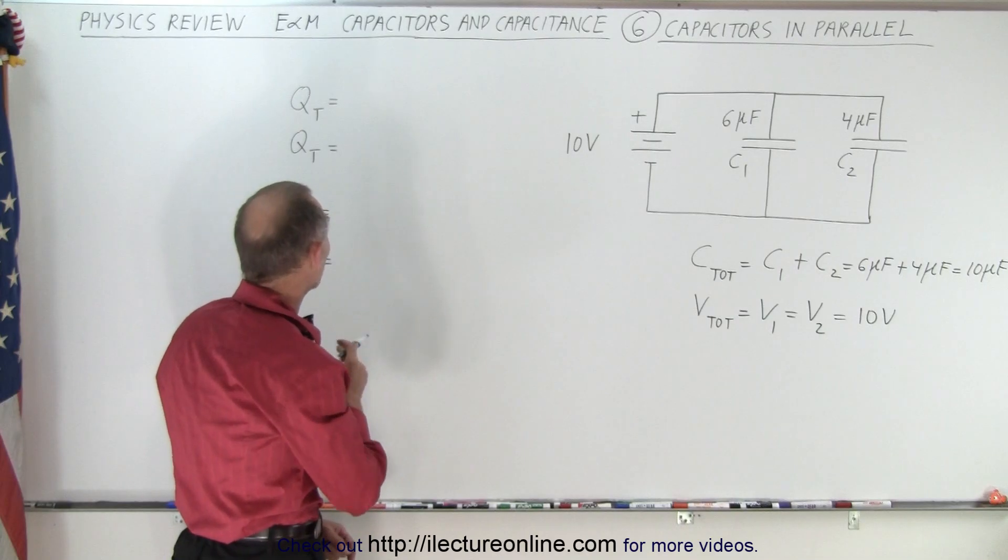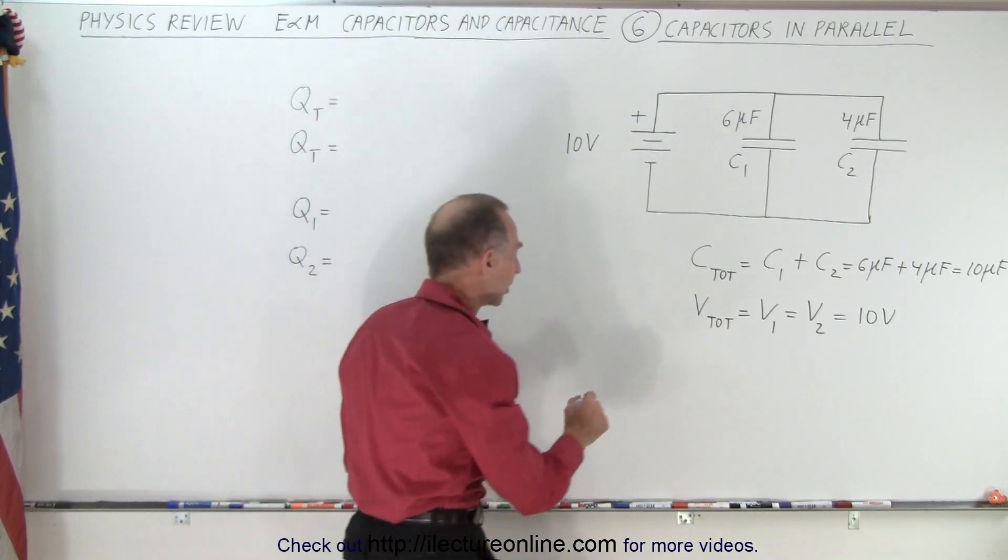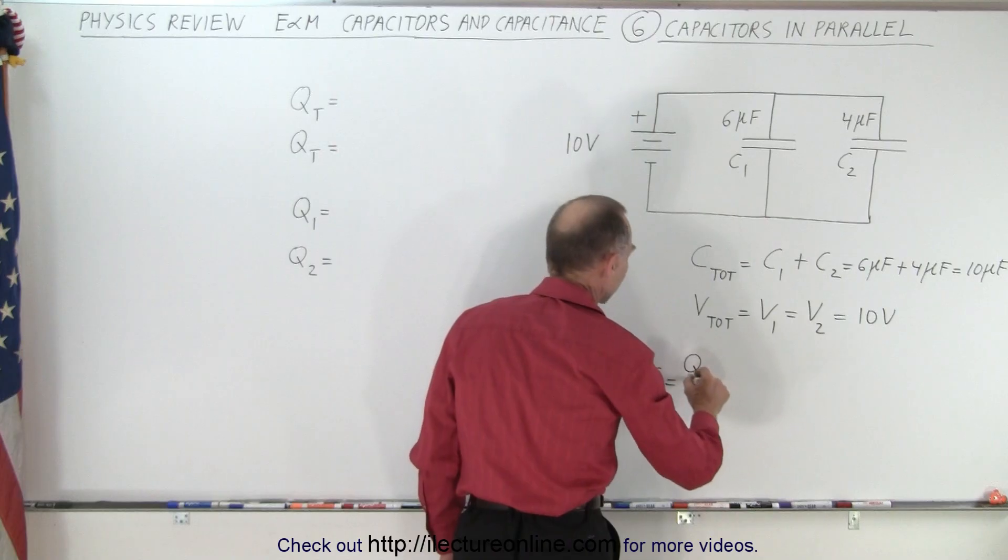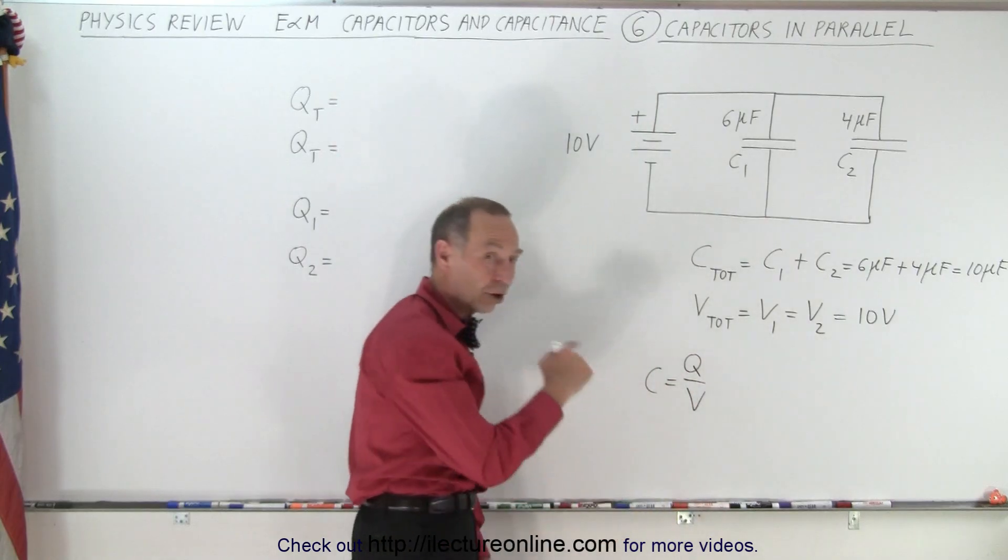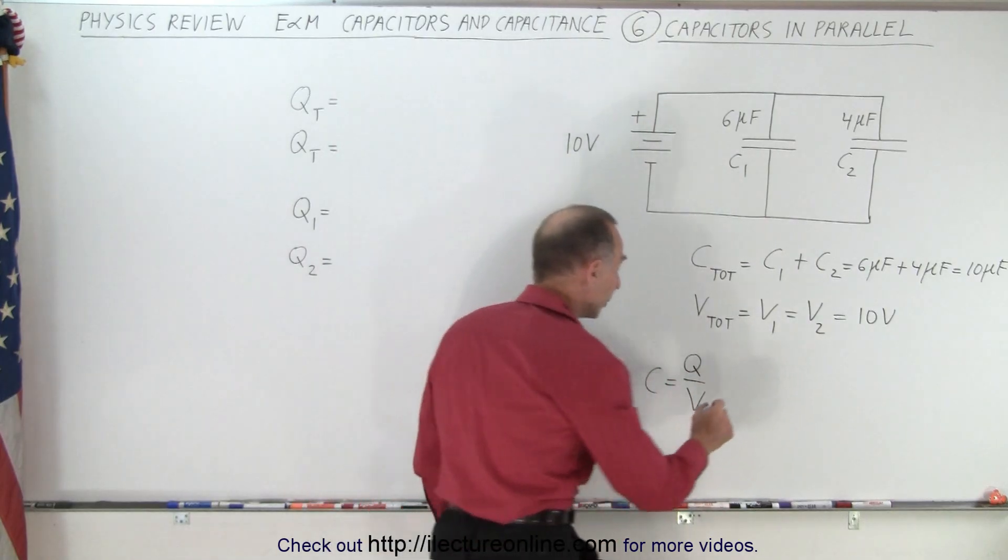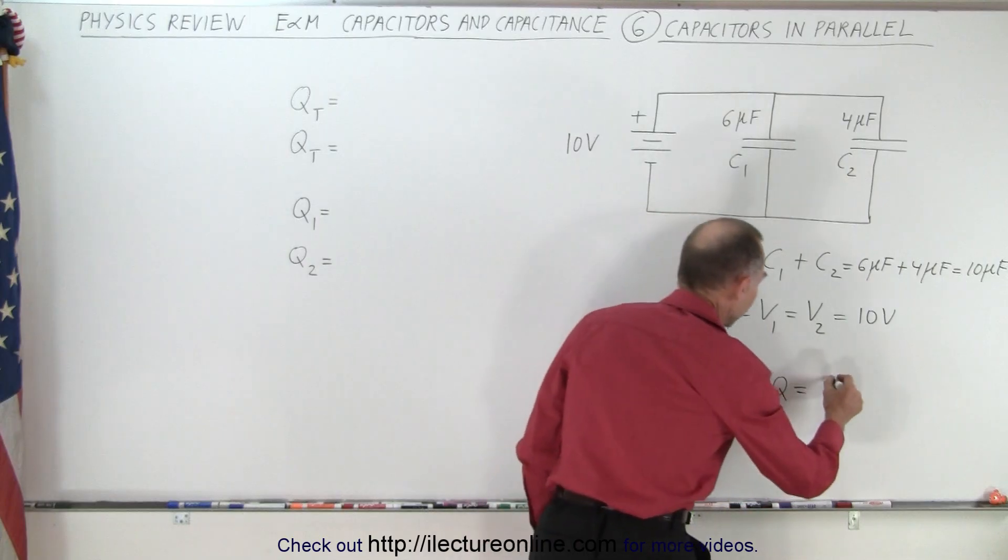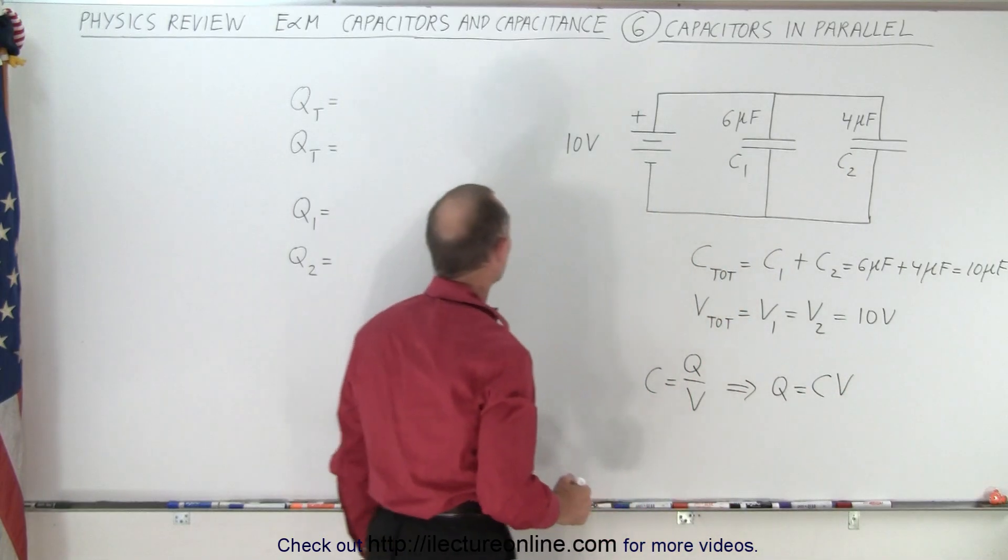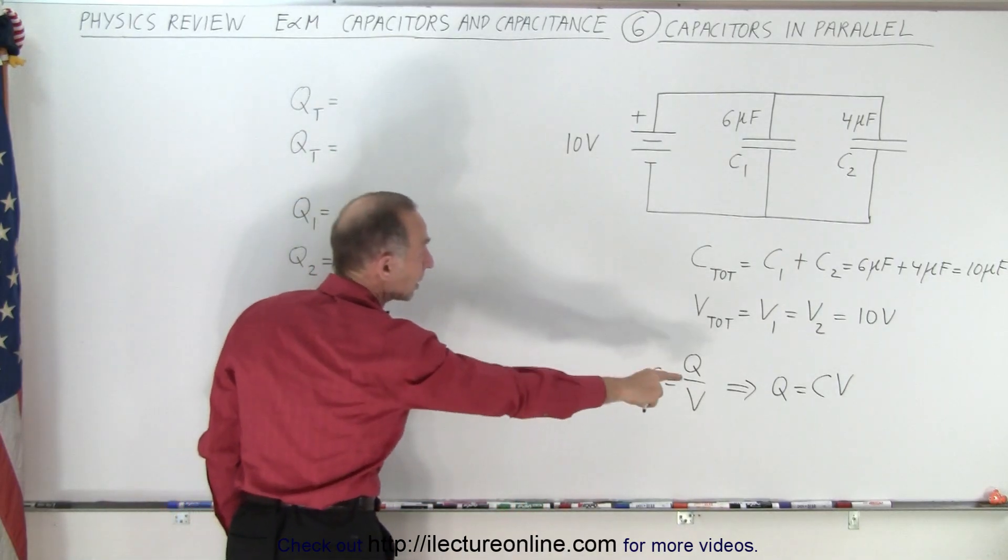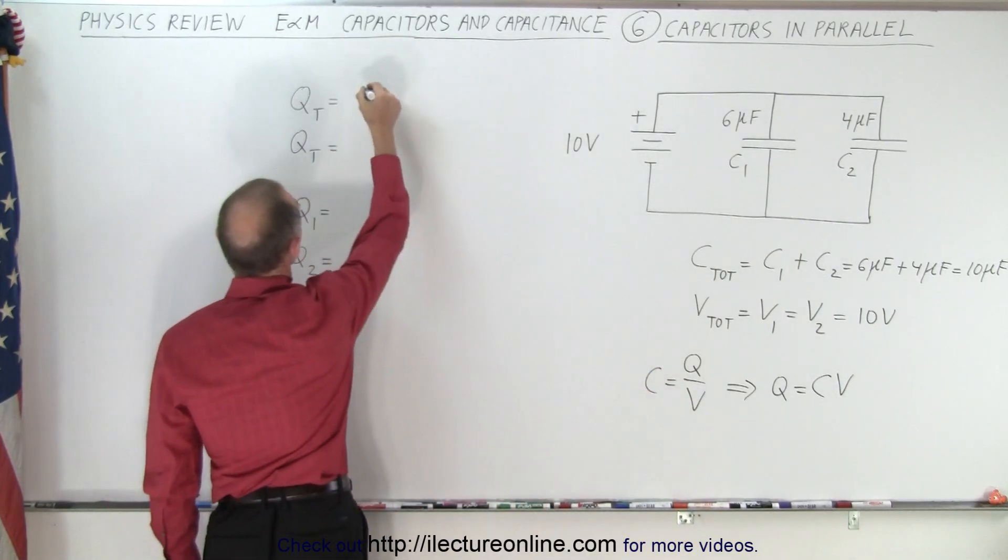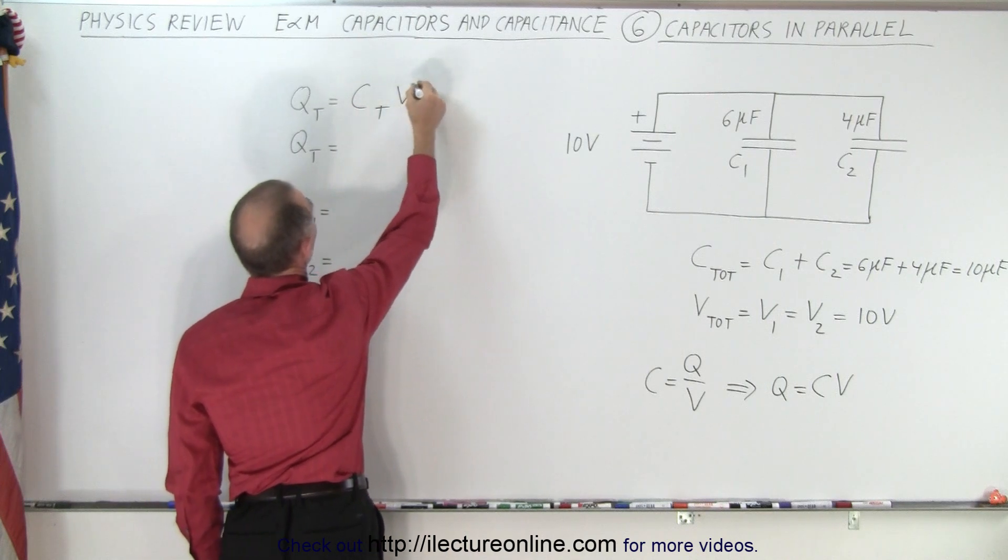What about the total charge? Well, notice that the definition of capacitance is equal to the charge it collects over the voltage that pushes the charge on there. So therefore, we can then conclude that the charge on the capacitor equals the product of the capacitance and the voltage. So the total charge is going to be the total capacitance, C total, times the voltage.